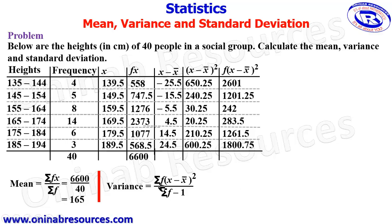So the next thing we need to do is sigma f(x - x̄)² - that's summing up all the values in this column. So 2601 plus 1201.25 plus 242 plus 283.5 plus 1261.5 plus 1800.75 gives 7390. Then we substitute into our formula to get our variance.